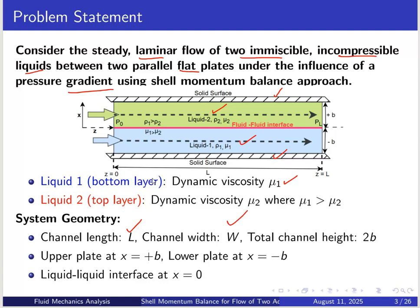The centerline starts from the mid of the channel at zero. From there, the distance to the bottom plate is minus B (negative x direction) and to the top plate is plus B (positive x direction), giving a total channel height of 2B. So the upper plate is at x equals plus B, the lower plate at x equals minus B, and the liquid-liquid interface is at x equals zero.